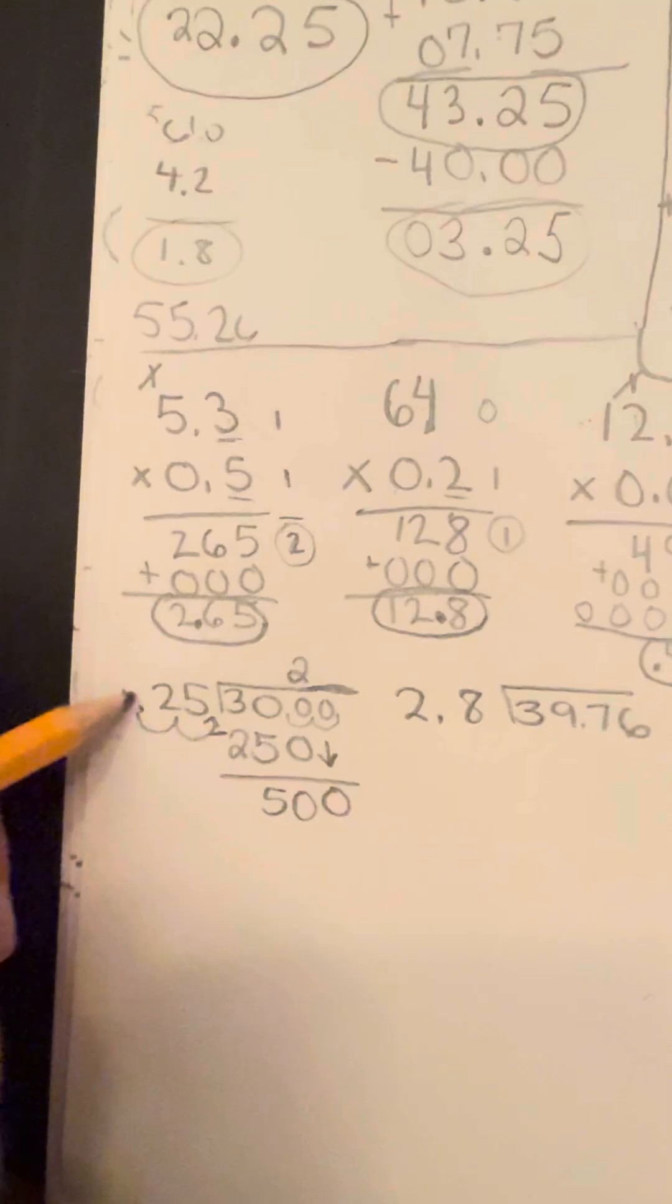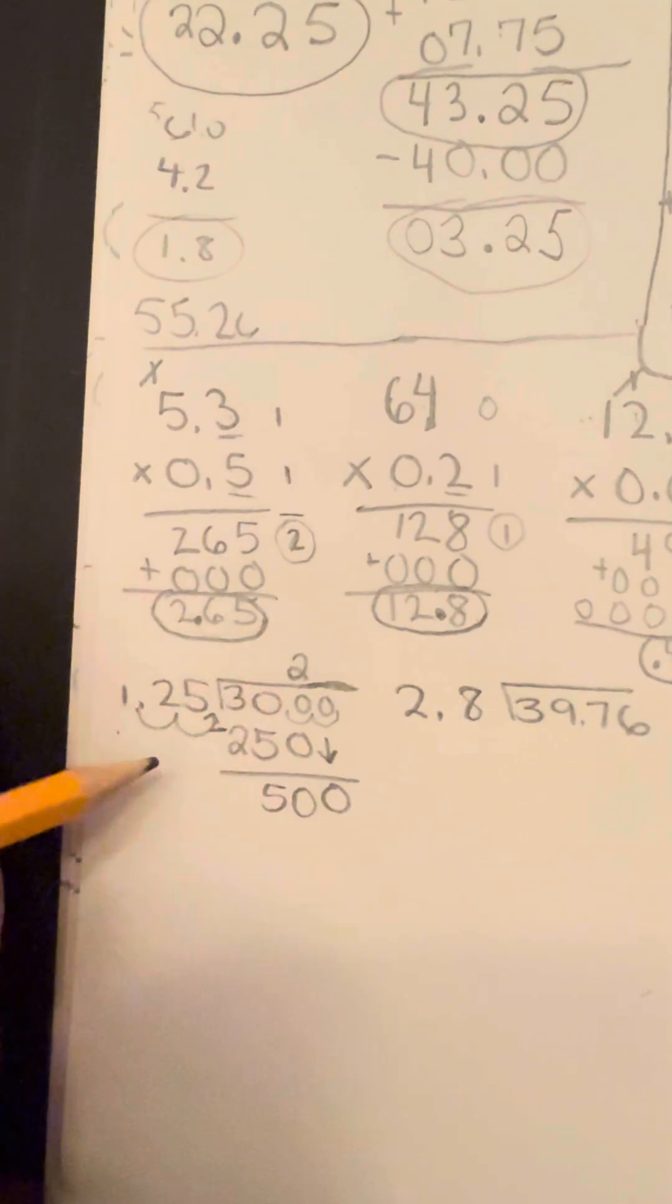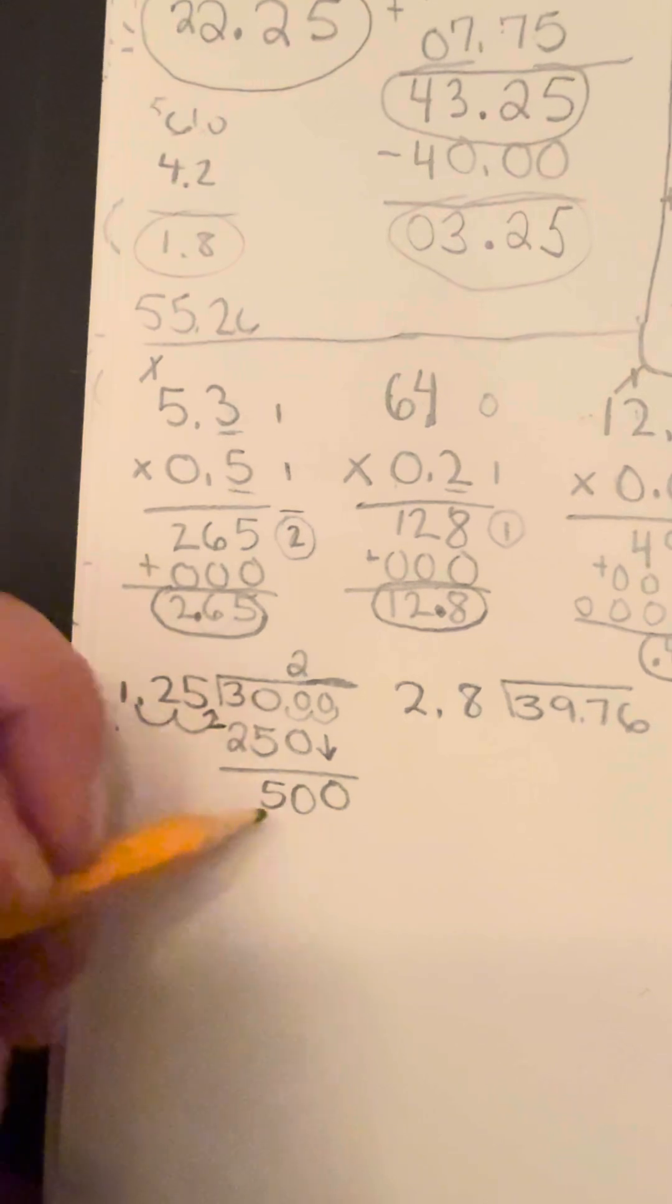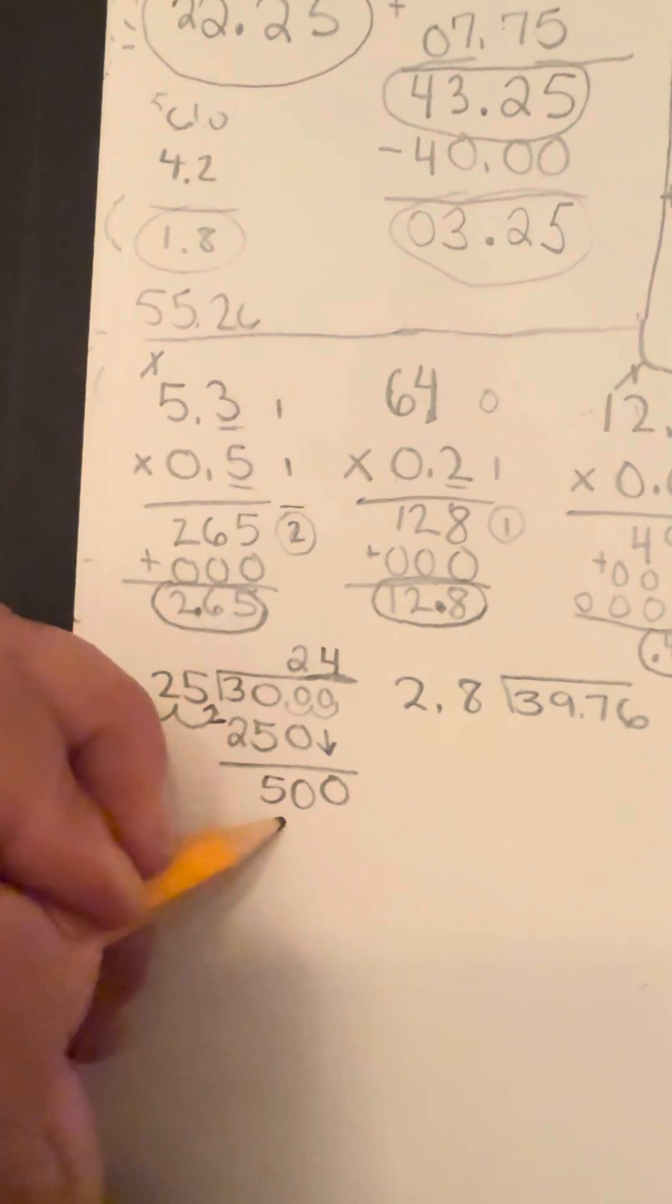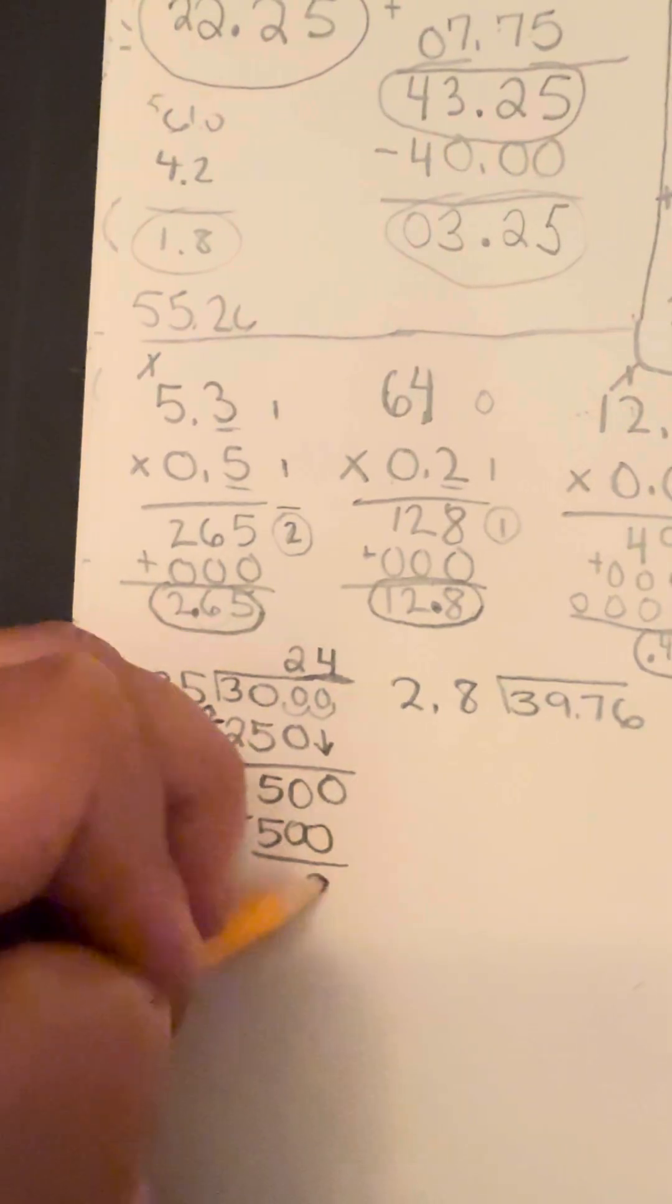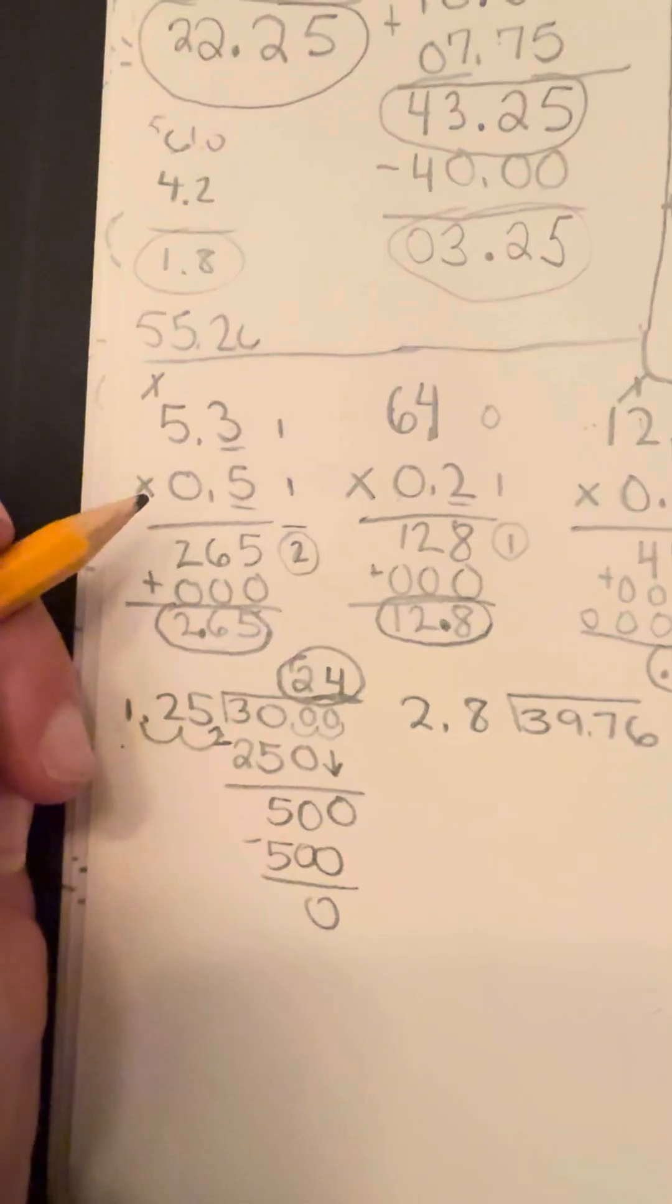So again, if two of these is 250, then that would mean four of those would be another 250. Well, 250 and 250, that would be 500. That's exactly what you need. So this goes in 24 times, nice and even. Leave me with a zero remainder. So my finalized answer would just be 24.